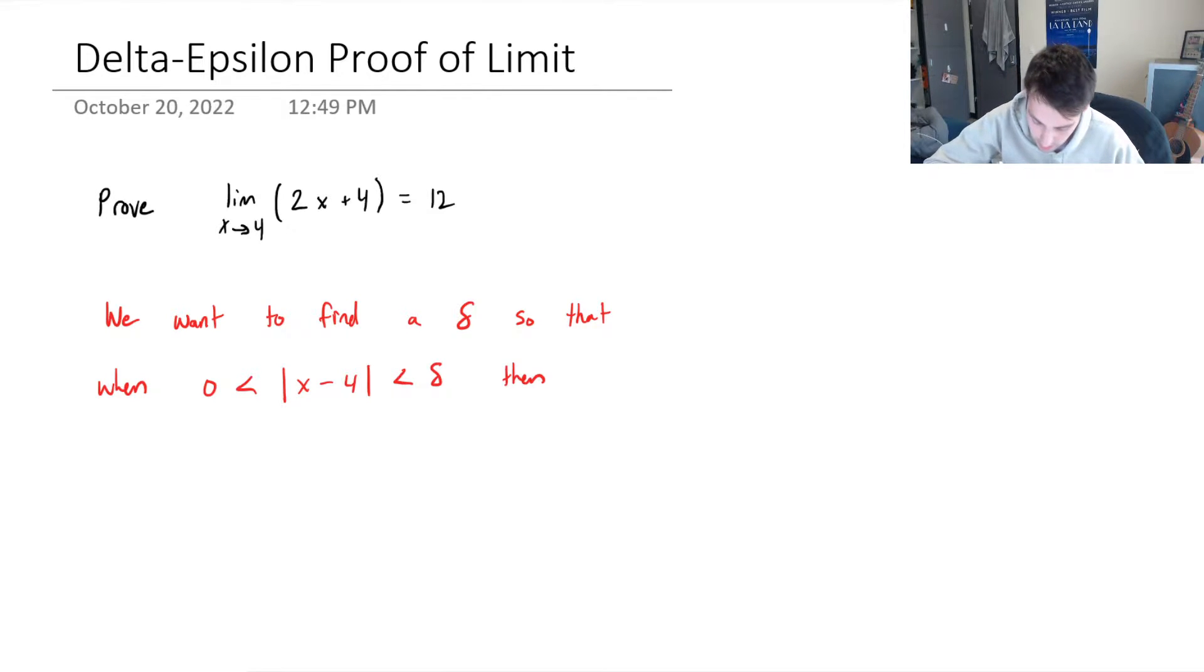then the function 2x plus 4 minus what the limit evaluates to, 12, that should be less than epsilon for all epsilon greater than 0.